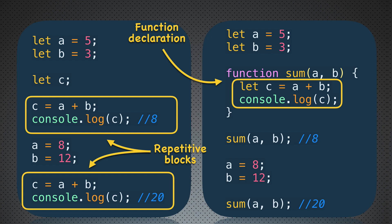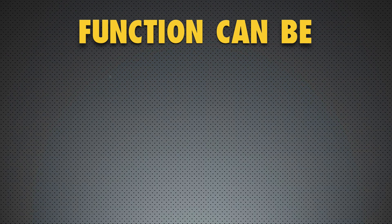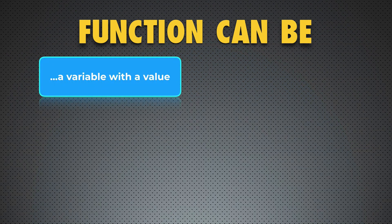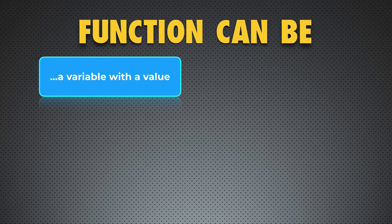But how do functions look like in JavaScript, and how can you use a function? There is a variety of usages of the function in JavaScript. A function can be a variable with a value, and we have just seen this in the previous example. There was a variable called sum, and the value of that variable was actually the function body with two commands and parameters—two parameters a and b.